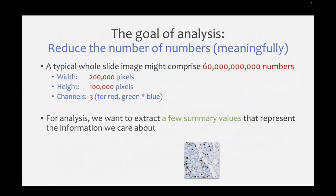The goal of analysis is to get summary numbers at the end, but the input images are just pixels - just numbers - but the scale is quite different. A typical whole slide image could have maybe 60 billion numbers. Thinking about it: the width could be 200,000 pixels, the height 100,000 pixels - multiply those together to get the number of pixels, then multiply by three for the red, green and blue values. We end up with an absolutely enormous number of numbers. For analysis, maybe we want one count of cells or a percentage of positive cells - perhaps one, two, three, four, five numbers - going in with about 60 billion, so we have to do a pretty dramatic summarization along the way.